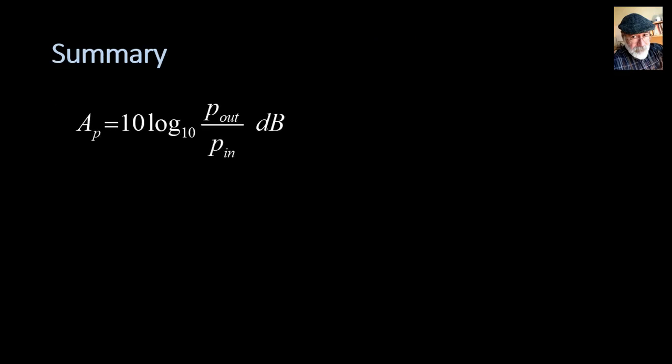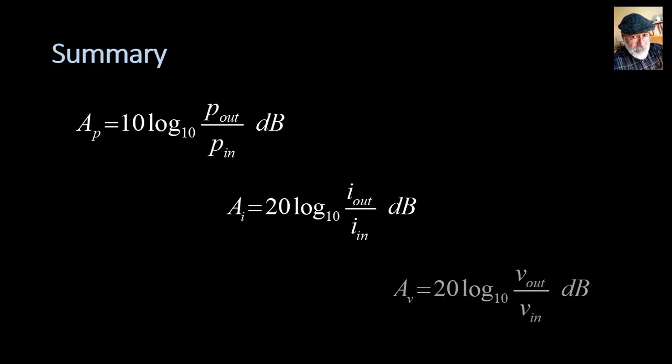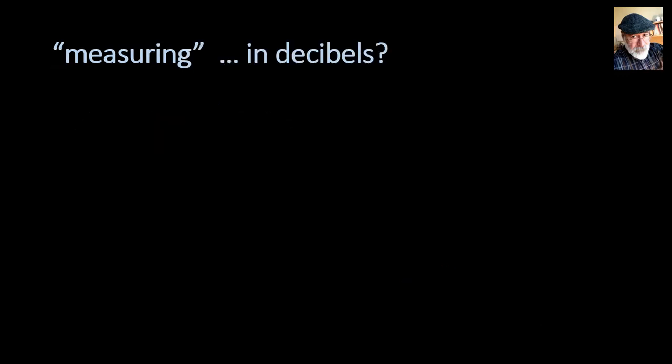Summarizing: the power gain is 10 times log₁₀ of P_out divided by P_in. The current gain in decibels is 20 times log₁₀ of I_out divided by I_in. And the voltage gain is 20 times log₁₀ of V_out divided by V_in. Observe the difference: 10 for power gain, and 20 for both current and voltage gains.